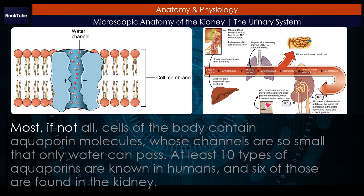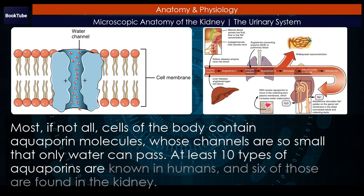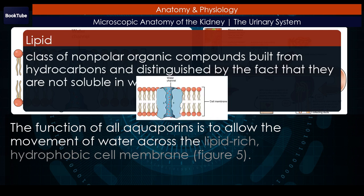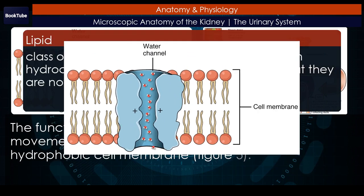Most, if not all, cells of the body contain aquaporin molecules, whose channels are so small that only water can pass. At least 10 types of aquaporins are known in humans, and 6 of those are found in the kidney. The function of all aquaporins is to allow the movement of water across the lipid-rich, hydrophobic cell membrane. (Figure 5.)